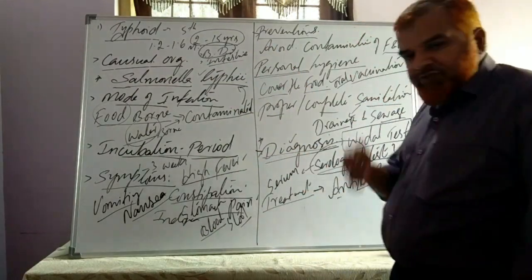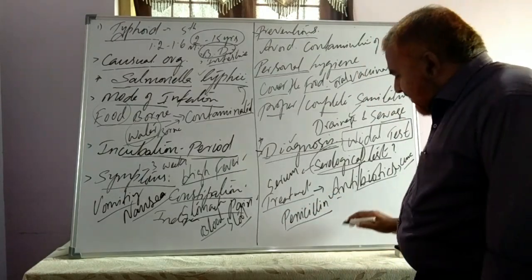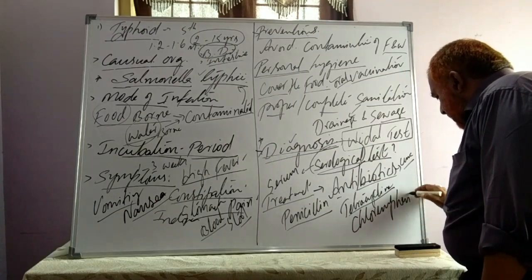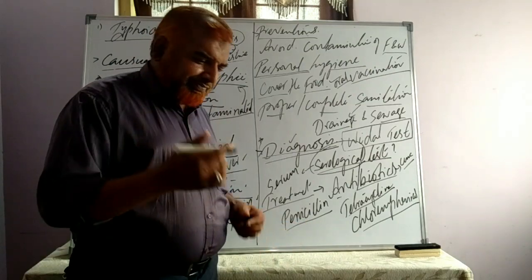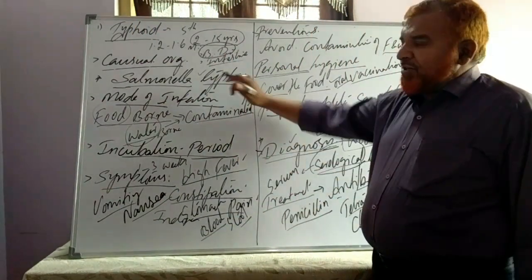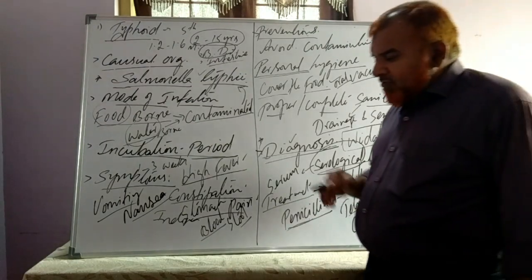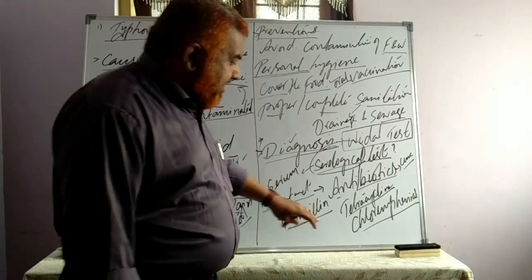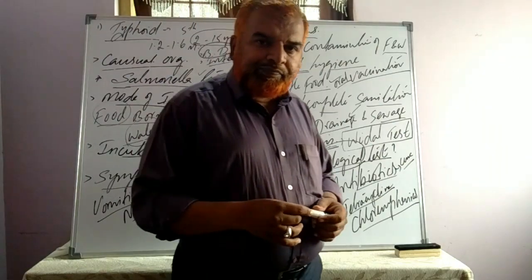The antibiotics used to treat typhoid include Penicillin, Tetracycline, and Chloramphenicol. These are strong antibiotics. Penicillin was the first antibiotic, discovered by Alexander Fleming from Penicillium notatum. Strong antibiotics are administered — typically morning and evening doses for five to six days — to kill the bacteria.